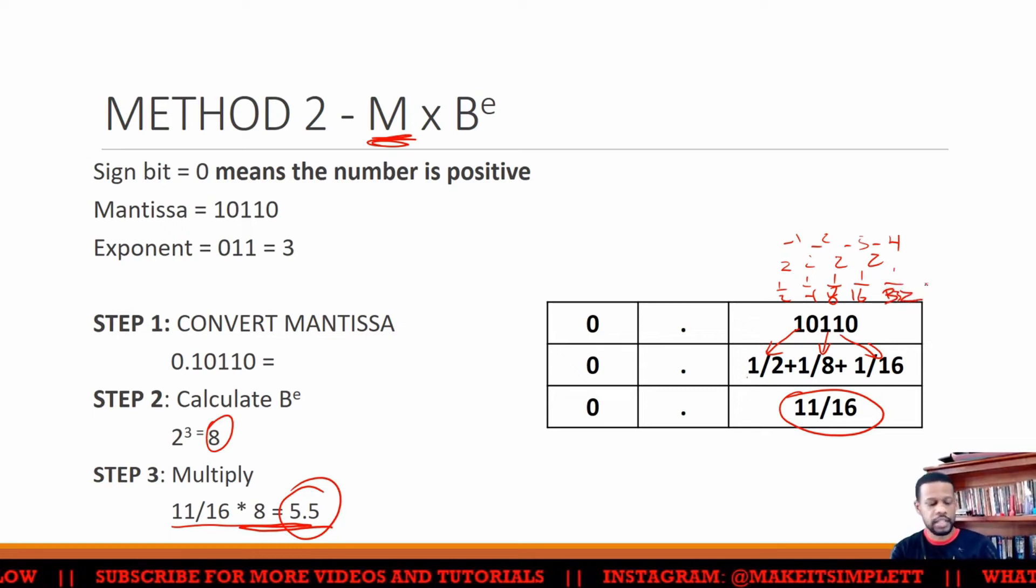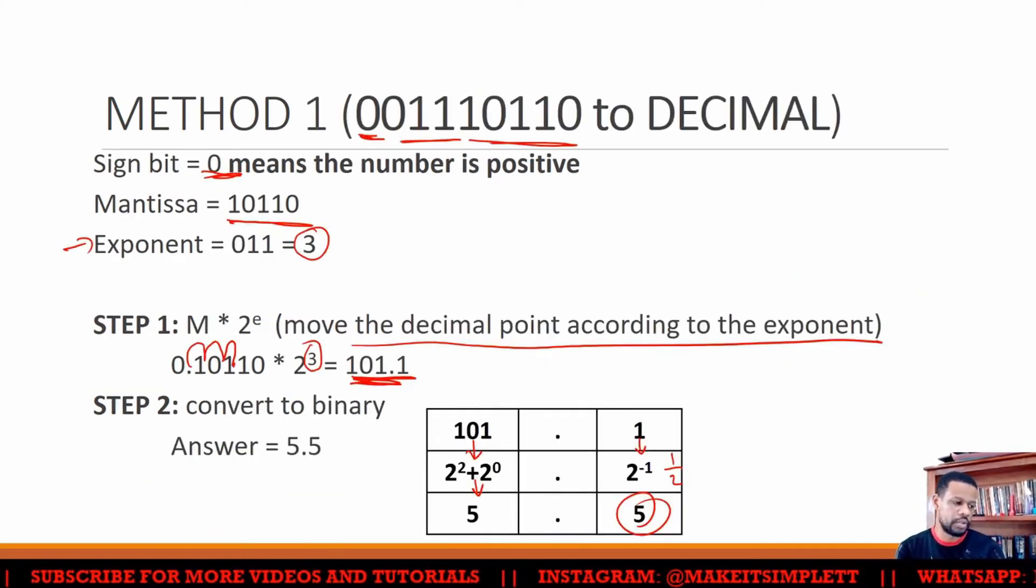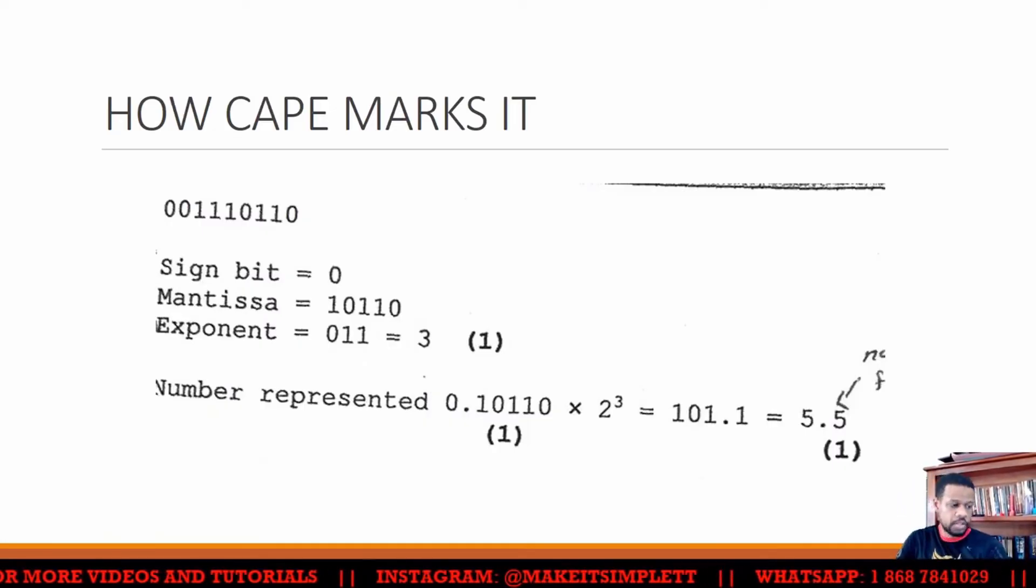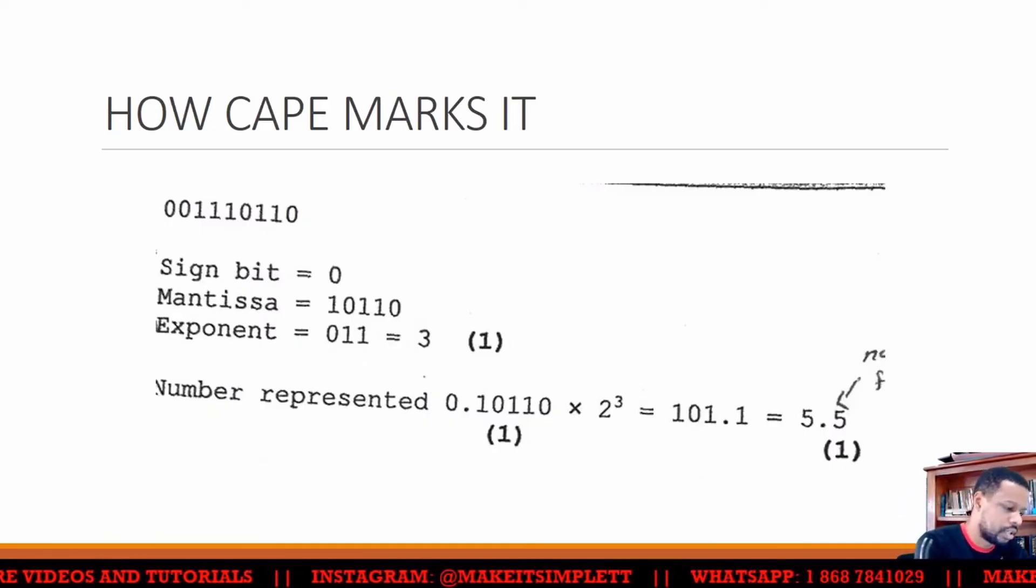Alright. So if you want to do that, you can do that. If you want to do this one, you'll do it. How I keep this marked is this: Do the first method. So the first method, they will give you the sign bits, the mantissa, and then the exponent.